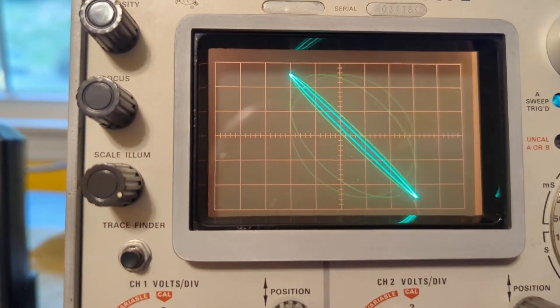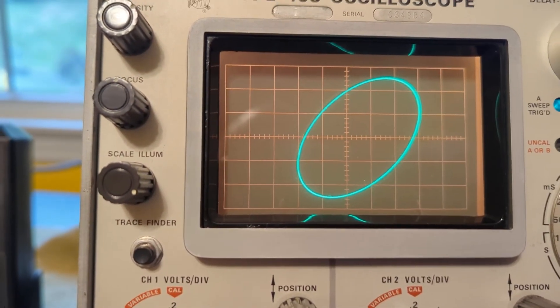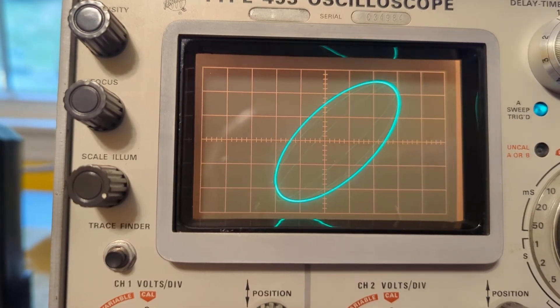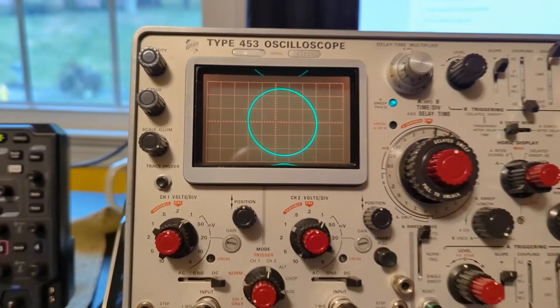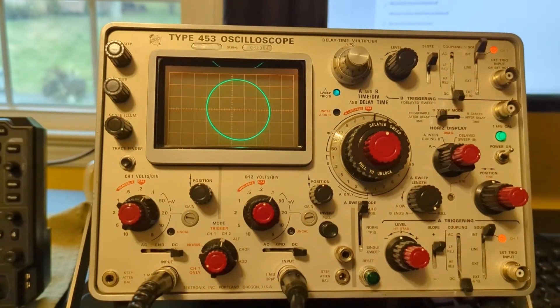Now I'm moving it right, so you can sort of see as I adjust the phase on one of the two channels, we get XY mode as we would expect.